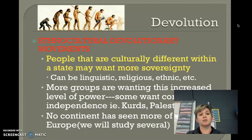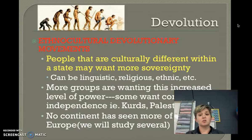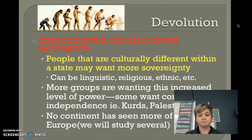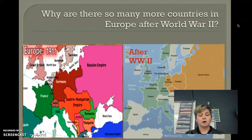The first major type of devolution is ethno-cultural devolution. These are movements where people feel culturally different from the majority — usually a minority who don't feel connected — so they want more sovereignty and self-determination. We're seeing this starting to happen all over the world. In the 1980s and 1990s we saw a lot of it in Europe, but we're seeing it more and more in Southwest Asia, the Middle East, with groups like the Palestinians and the Kurds.